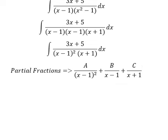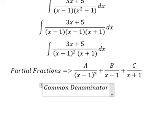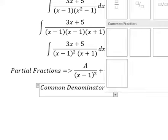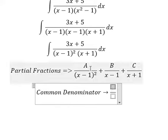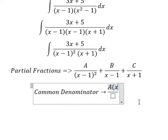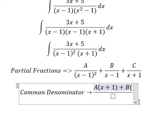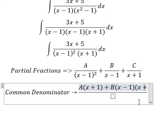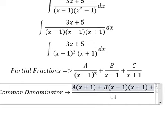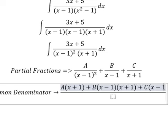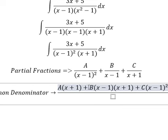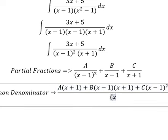Now we do common denominator. So for A, we multiply by (x plus 1). For B, multiply by (x minus 1)(x plus 1). For C, we put (x minus 1) to the power of 2. This one, we put (x minus 1) squared multiplied by (x plus 1).